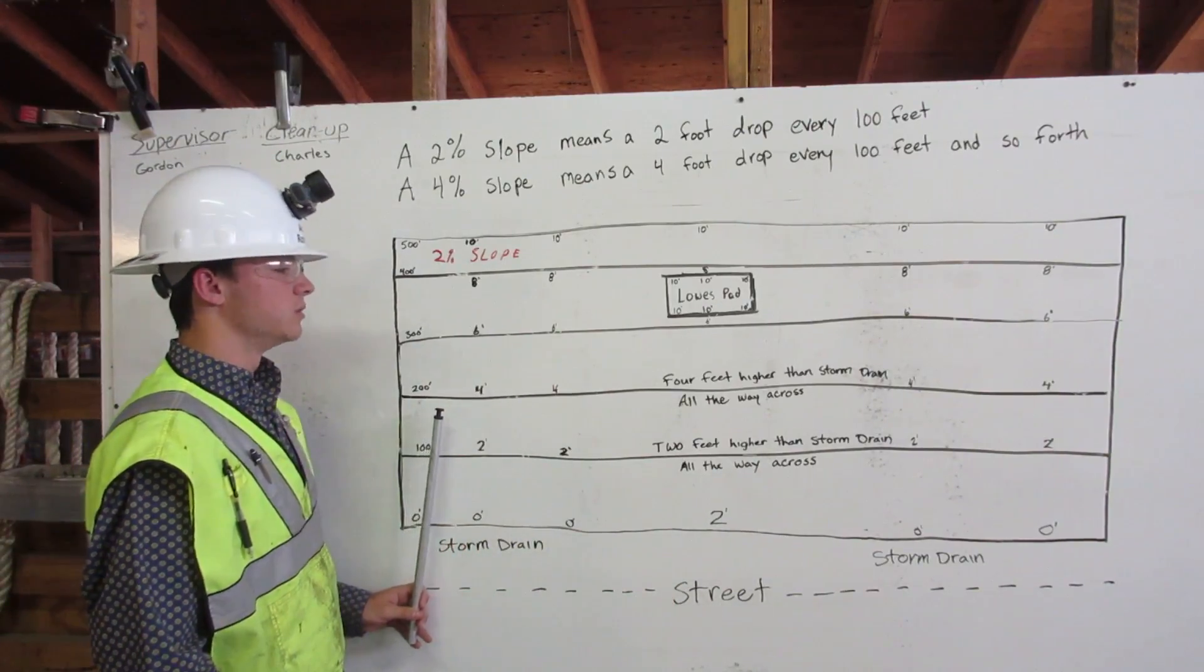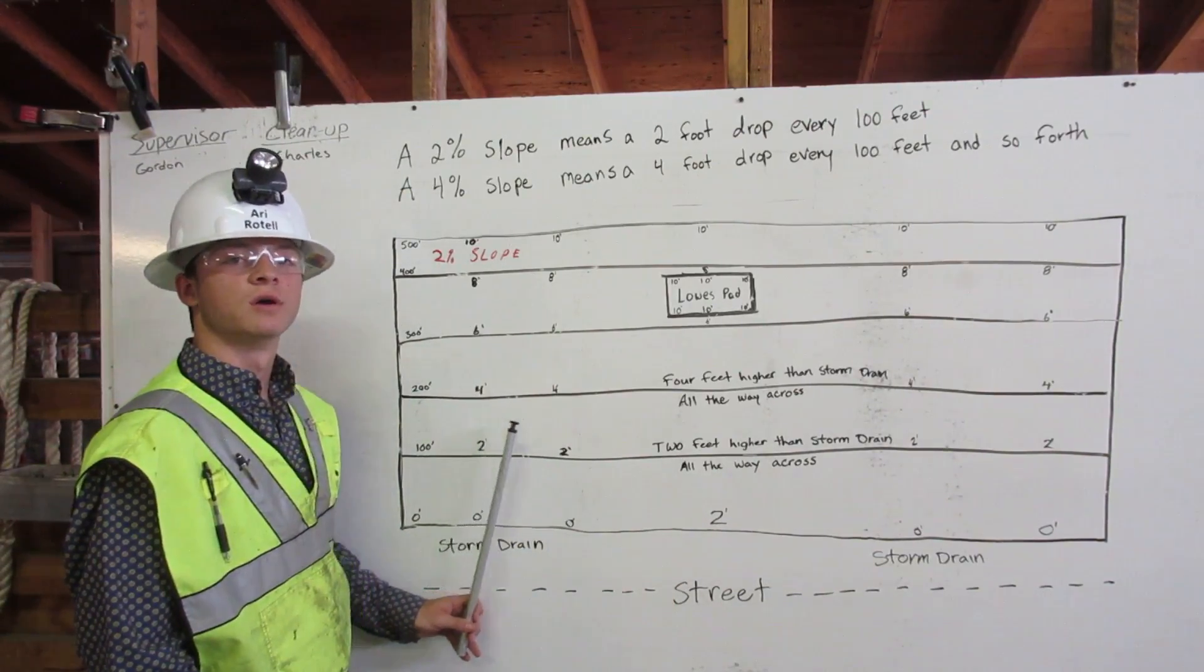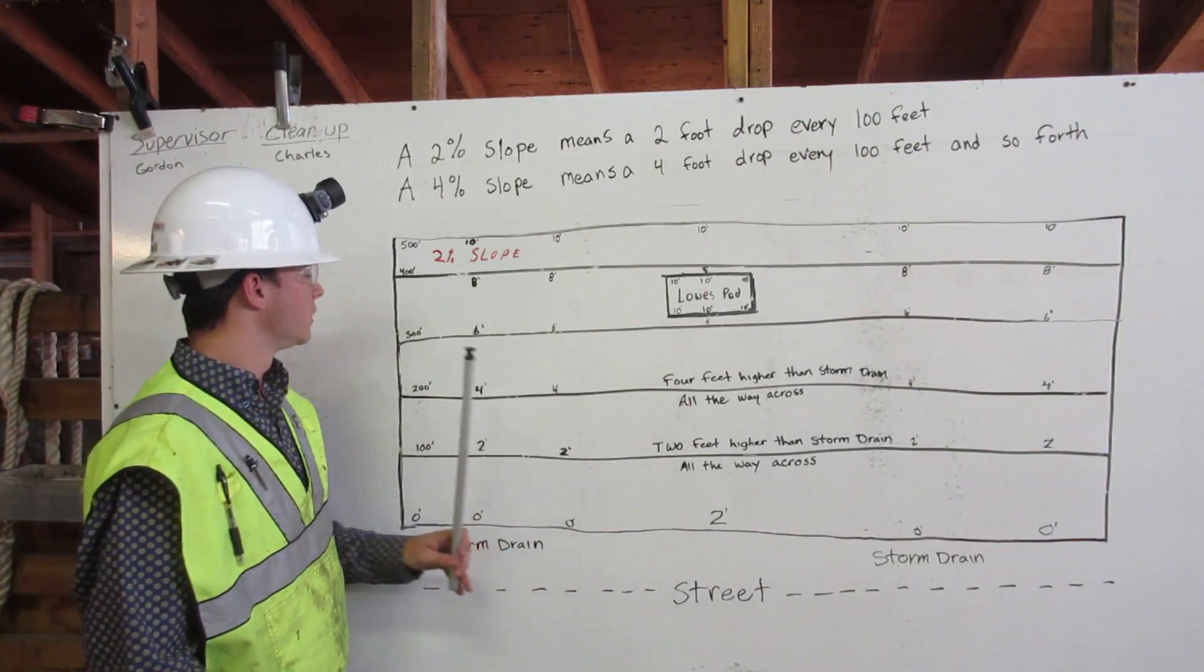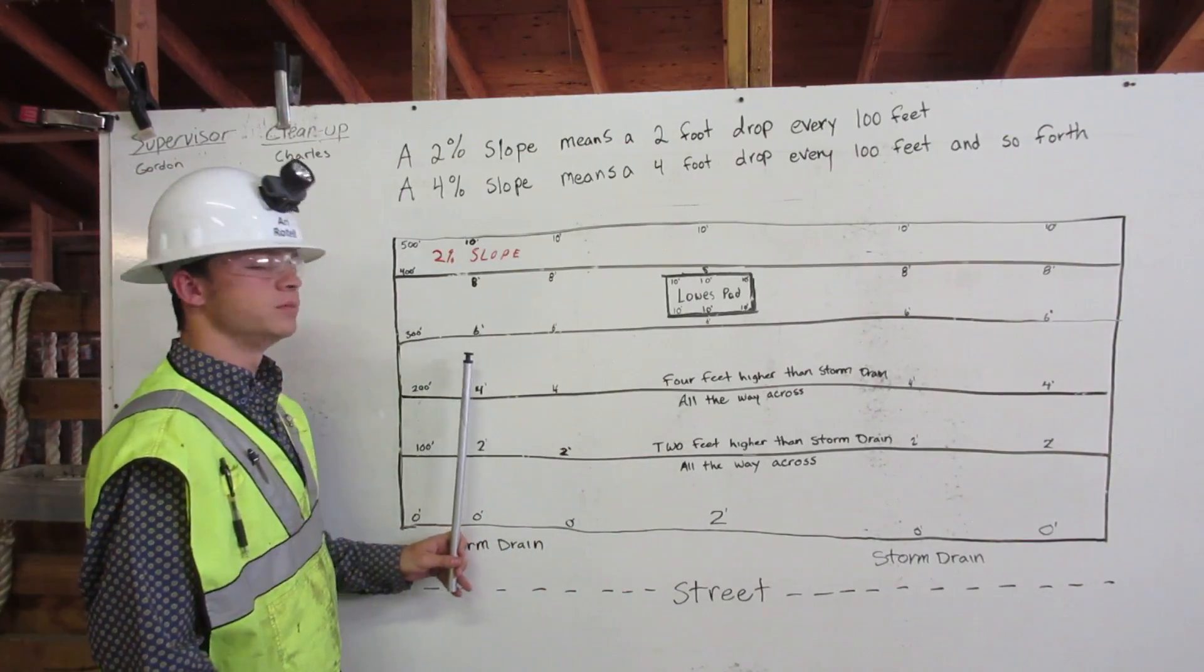At 200 feet, it will be 4 feet higher than the storm drain all the way across. At 300 feet, it will be 6 feet higher.